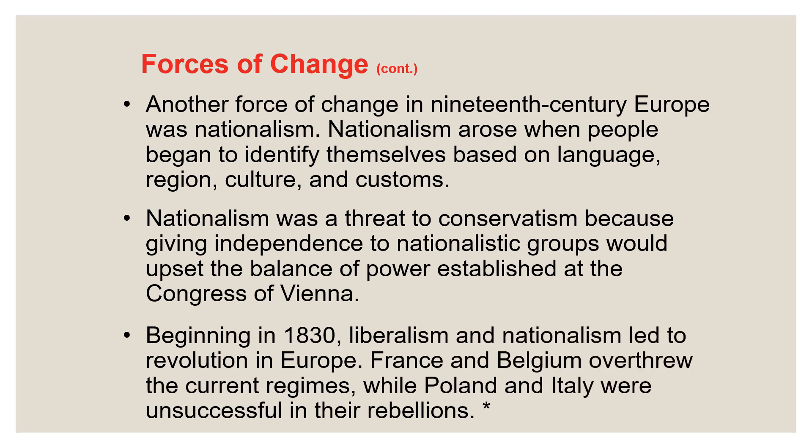Beginning in 1830, classical liberalism and nationalism went hand in hand and led to revolutions in Europe. France and Belgium both overthrew their current conservative regimes. France ended up with a more constitutional-style monarchy. Poland and Italy were unsuccessful in their rebellions. By 1848, beginning in France — when Paris sneezes, Europe gets a cold — we see revolutions sometimes referred to as a revolutionary virus spreading across Europe, fighting for classical liberalism and nationalism.